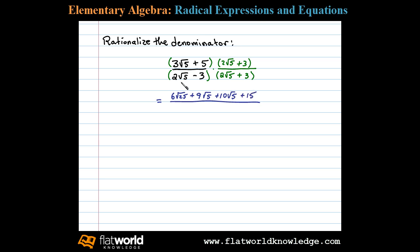In the denominator we have 2 square root of 5 times 2 square root of 5, which is 4 square root of 25, plus 6 square root of 5, and then minus 6 square root of 5, and finally minus 9. Notice that the positive 6 square root of 5 and the negative 6 square root of 5 add to 0.